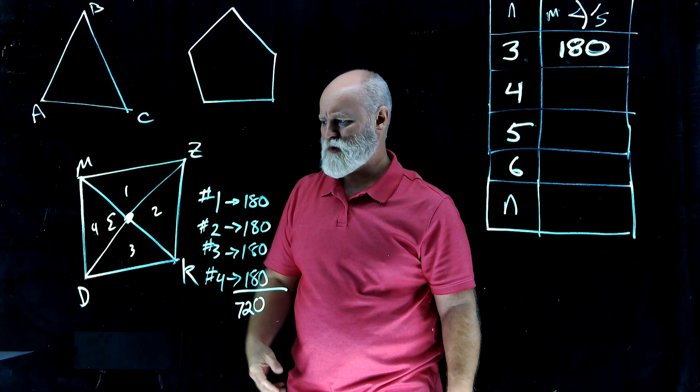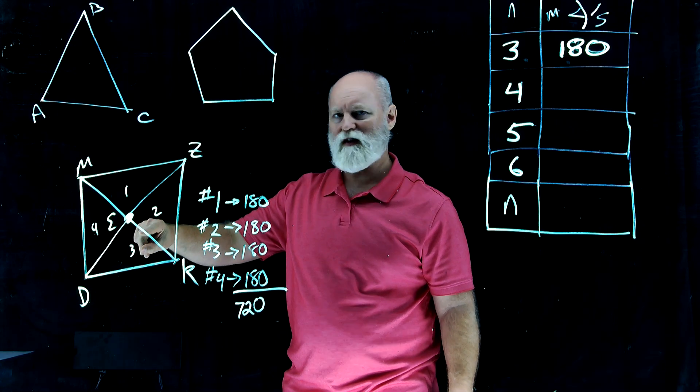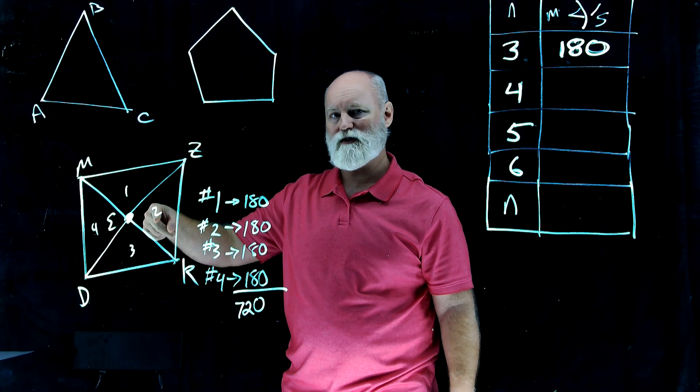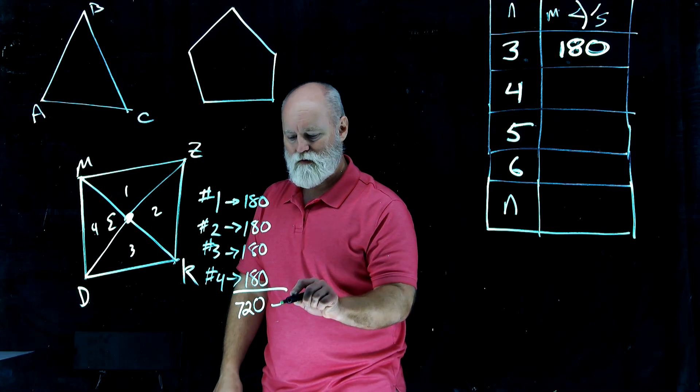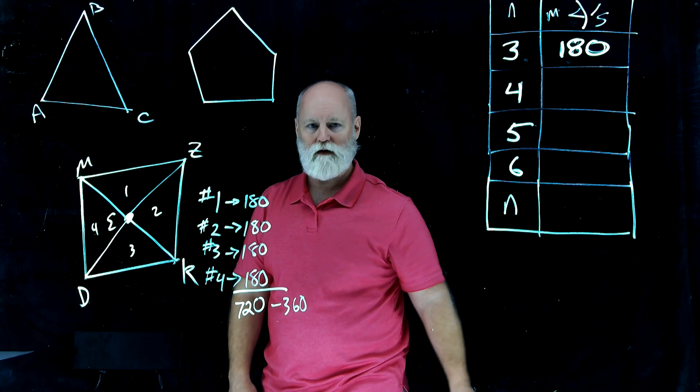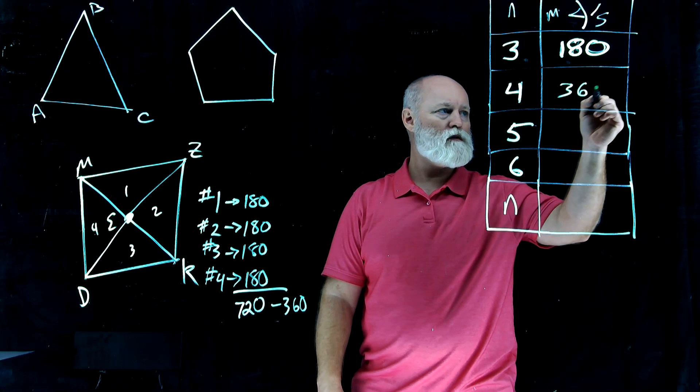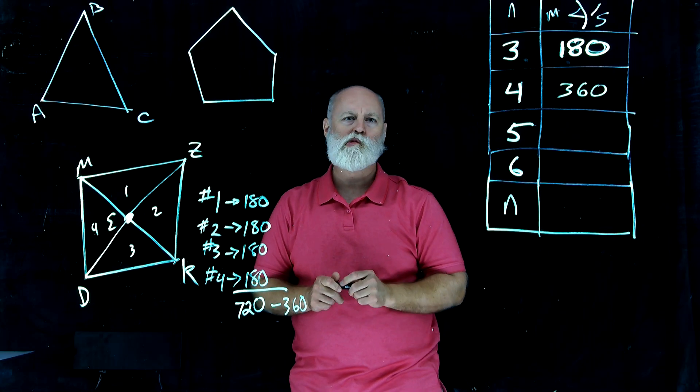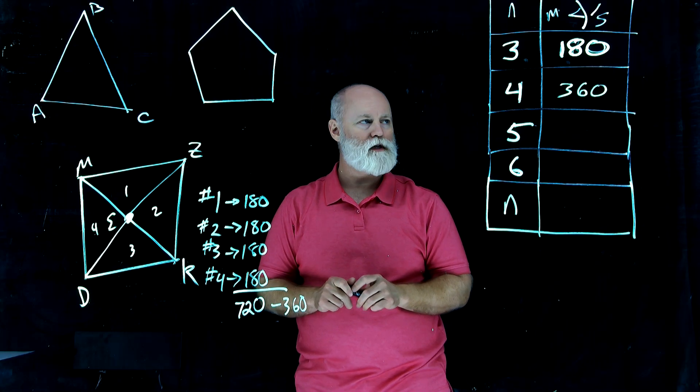So we've got to take that central piece out. And the thing is that we know a complete rotation is 360. So let's subtract off 360 from that, which gives us 360. That's pretty nice. That's cool, that's cool.